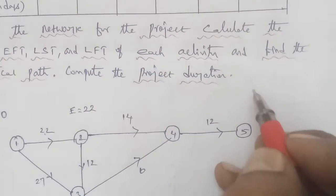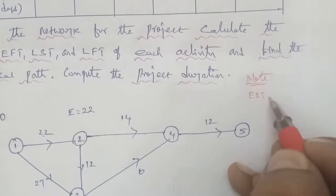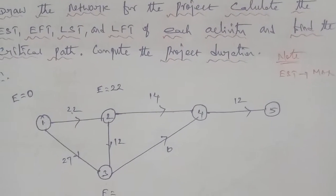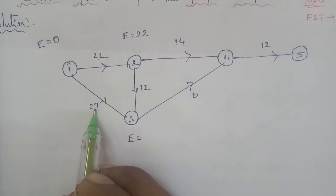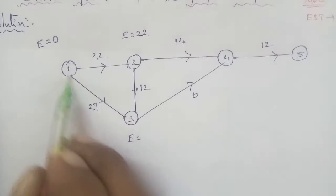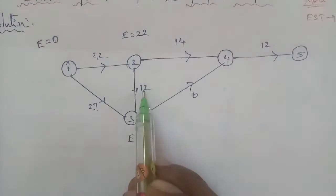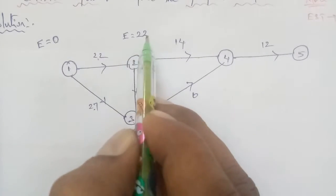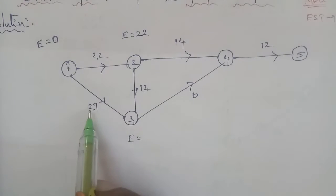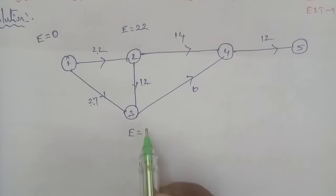Now calculating the earliest starting time for Node 3. We check the maximum value from all incoming paths. Path 1 to 3: 0 plus 27 equals 27. Path 2 to 3: 22 plus 12 equals 34. We take the maximum value, which is 34. So the earliest time at Node 3 is 34.